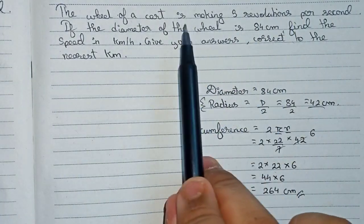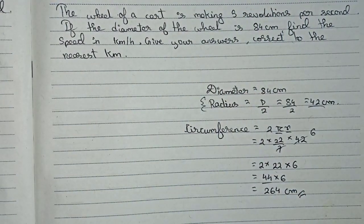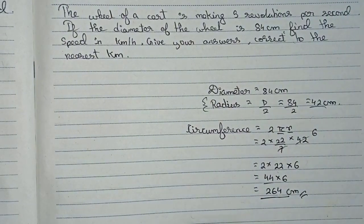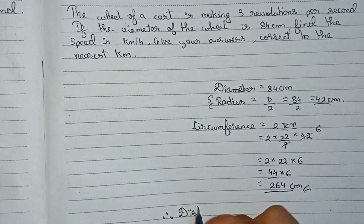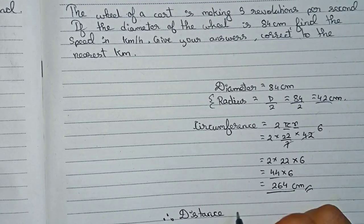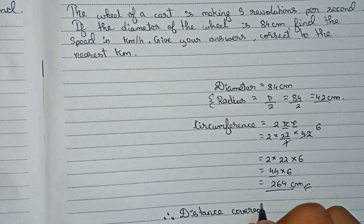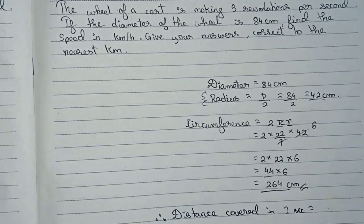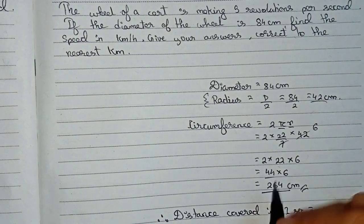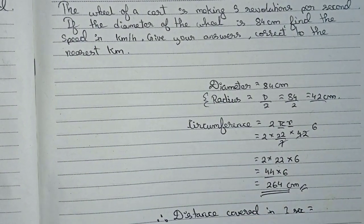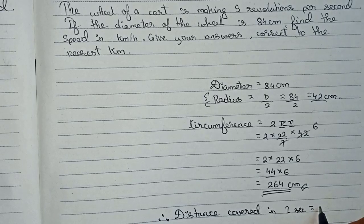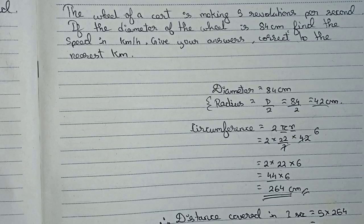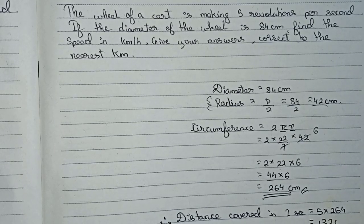In the question it is mentioned that the wheel is making 5 revolutions per second. One revolution means a distance of 264 centimeters. Therefore, the distance covered in one second is 5 into 264, which equals 1320 centimeters.